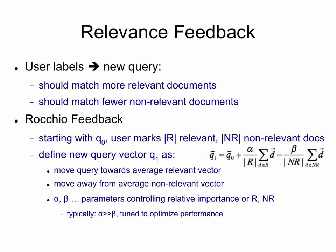The simplest algorithm — known as the Rocchio feedback algorithm — is: you take the original query, compute the mean of the relevant documents, compute the mean of the non-relevant documents, add a little bit of the relevant mean to the query as a vector addition, and subtract a little bit of the non-relevant mean from the query. What you're trying to do is move the query closer to the average relevant document and further away from the average non-relevant documents. Alpha and beta are parameters that control the relative importance of the relevant and non-relevant classes.